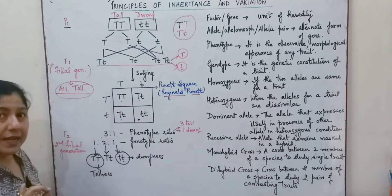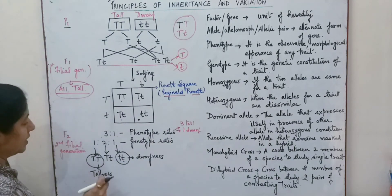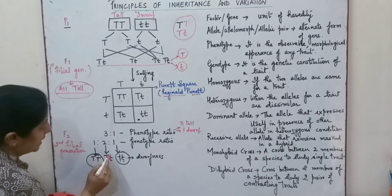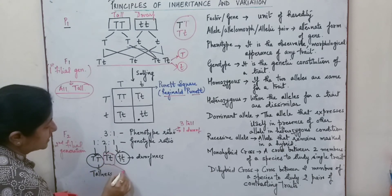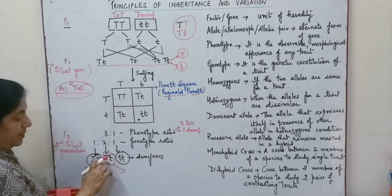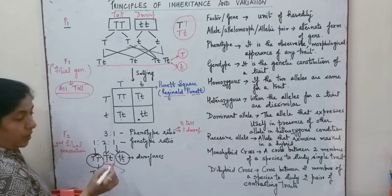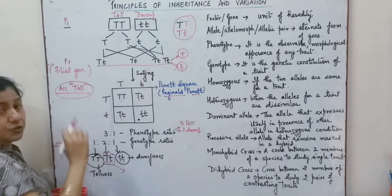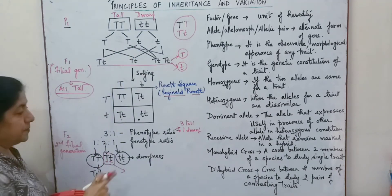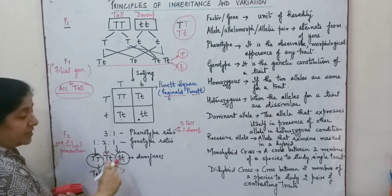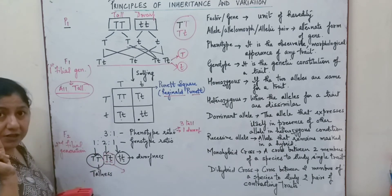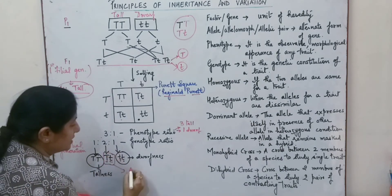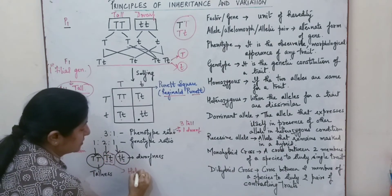Heterozygous is when the alleles for a particular trait are dissimilar. As you can see, in this condition the members of the allelic pair are not similar — one is capital T representing tallness and the other represents dwarfness. Although the phenotype shows tallness as a trait, the allelic pair has different members, so this is a heterozygous condition.